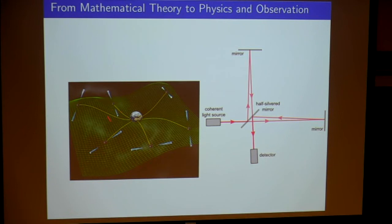The Earth, for instance, also changes the curvature around itself — this has to be taken into account in GPS, otherwise GPS wouldn't work. These are pulsars.